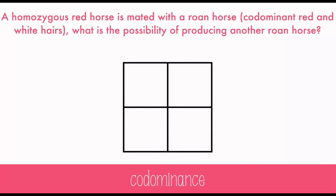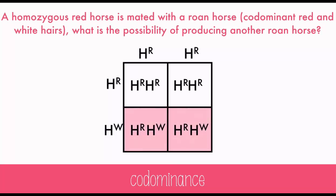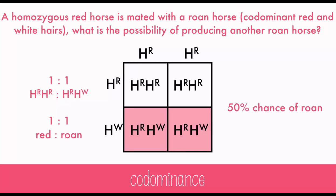I'll use the letter H to stand for hair, R for red, and W for white. Both the red allele and the white allele get capital letters because neither can truly dominate over the other — they both show up. When we cross our red horse and our roan horse, we get 50% homozygous red and 50% heterozygous roan. That's a 50% chance that the horse will be roan.